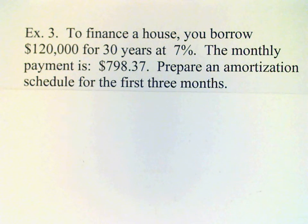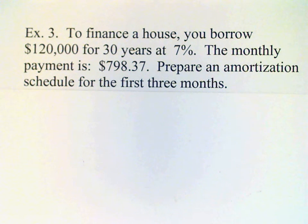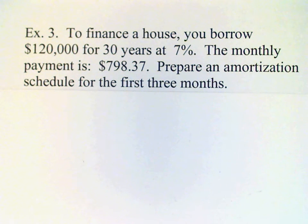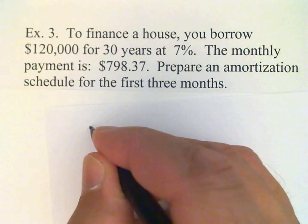I'd like to do one more example of an amortization schedule for a mortgage. The amortization schedule would be too long to work out in its entirety, so we'll just do the first three months. We'll suppose the original amount was $120,000 and the interest rate is 7% per year. We're going to use the payment information — $798.37 — to prepare the amortization schedule.